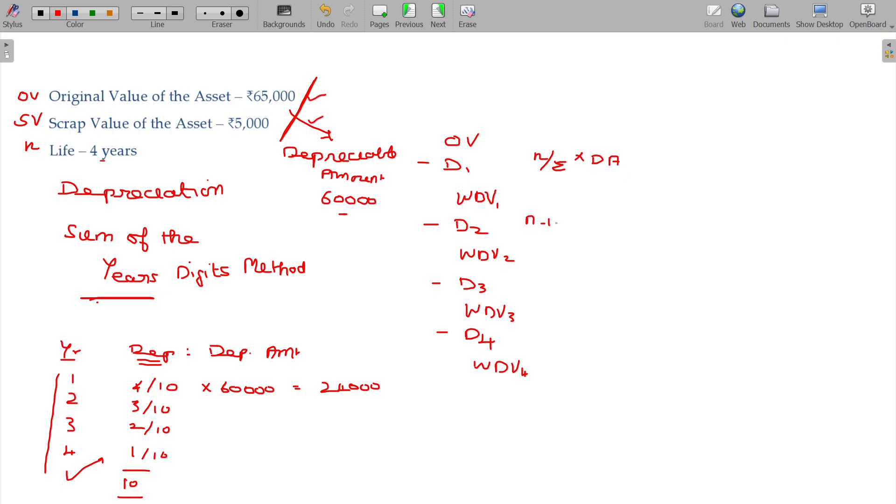Second year, n minus 1 divided by sum of the year's digits method into depreciation amount. Third year, n minus 2. You have no need to understand this as a formula. It is a logic, understanding is more than enough. Into depreciation amount. The last year, n minus 3, it will be 1. Clear? Divided by summation into depreciation amount. That is the logic.